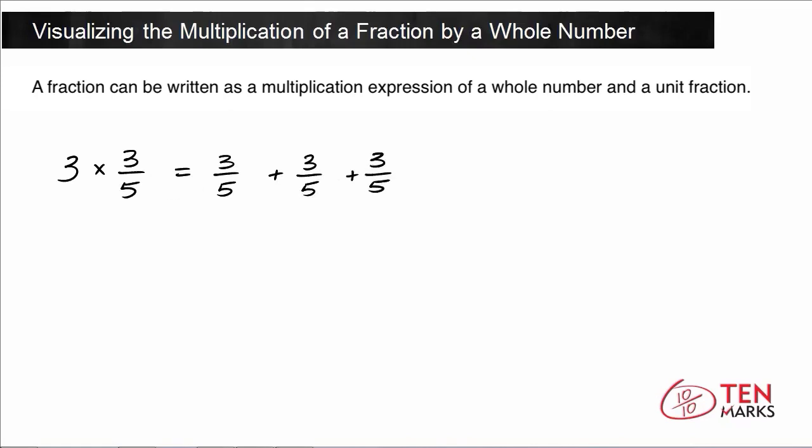Now what were to happen if you wanted to find the sum? So again, these are all like fractions because the denominator is 5 for each fraction. And what you would do then is add the numerators. When you add 3 to itself 3 times, you get 9. So 3 times 3/5 is equal to 3/5 plus 3/5 plus 3/5, which is then equal to 9/5.